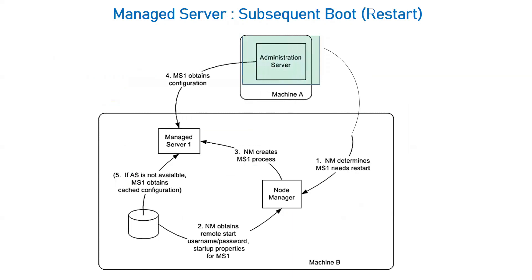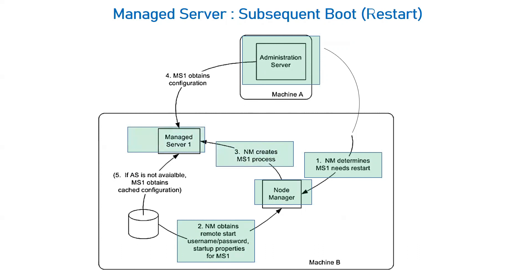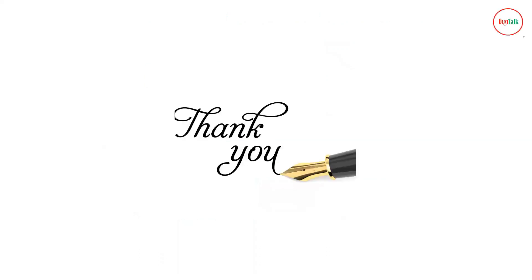For subsequent boots or restarts, the server is again started from the admin console via Node Manager. Node Manager obtains the username from the boot.properties file inside the data/nodemanager folder, initiates the managed server, and obtains configurations from the admin server. If the admin server is not reachable, the managed server obtains local cache configurations to start. This covers how we can change the password for the admin user for both admin server and managed servers.